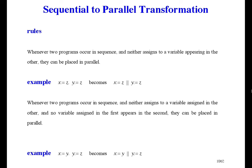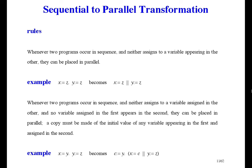Here's a more general rule. Whenever two programs occur in sequence, and neither assigns to a variable assigned in the other, and no variable assigned in the first appears in the second, they can be placed in parallel. In the example, x gets y, and then y gets z. They assign to different variables, and no variable assigned in the first — that's x — appears in the second. So they can be put in parallel. But secretly, a copy must be made of the initial value of any variable appearing in the first and assigned in the second — that's y.